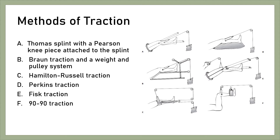A fourth type is Perkins Traction. This is essentially a straight pull along the axis of the femur through a proximal pin but without a splint. The control of femoral alignment was poor and malunion was common.